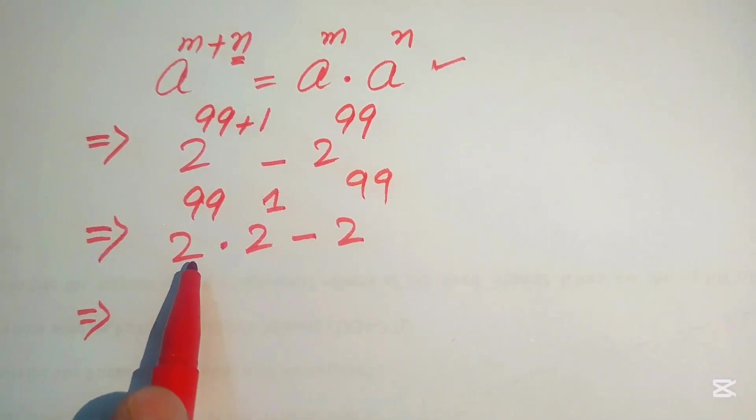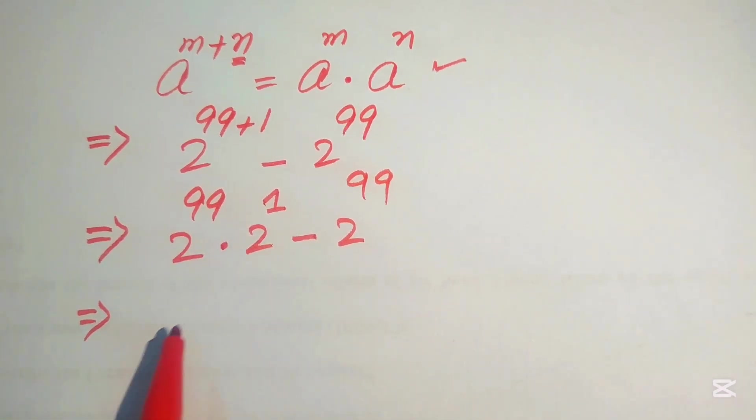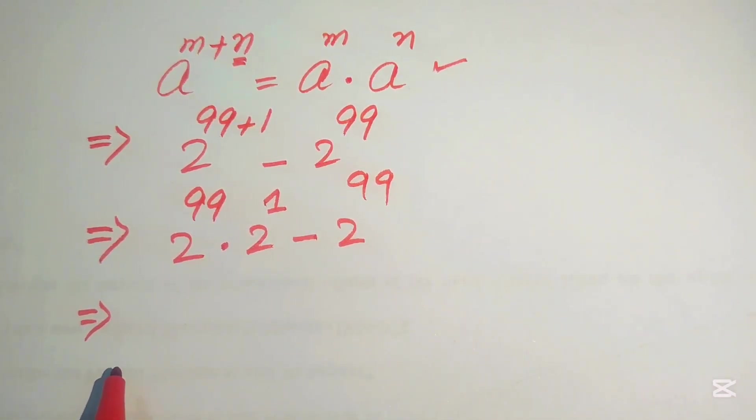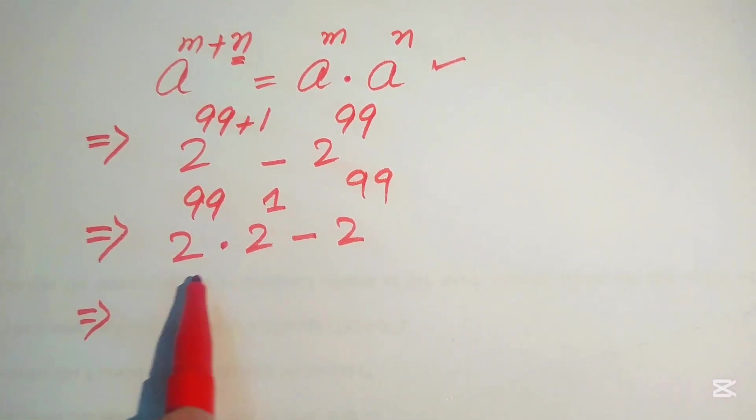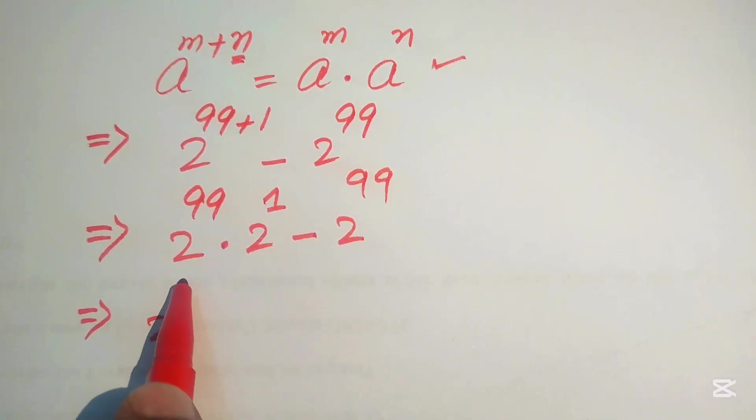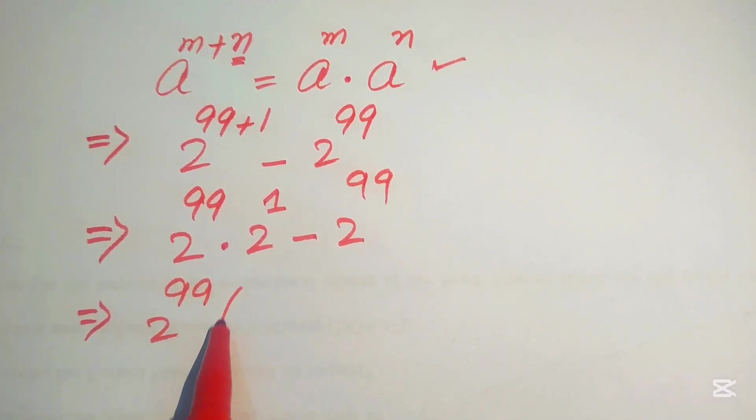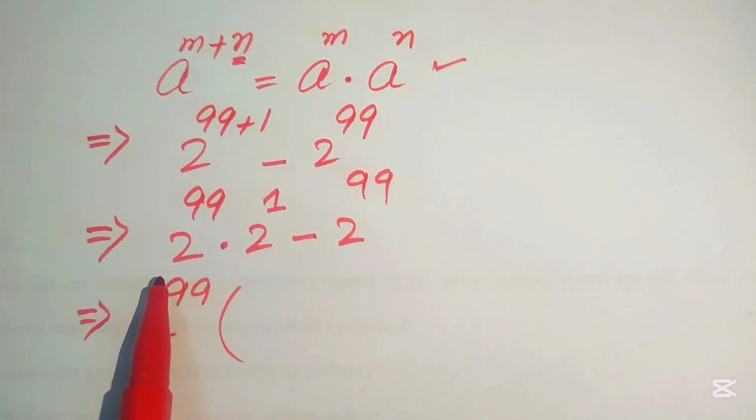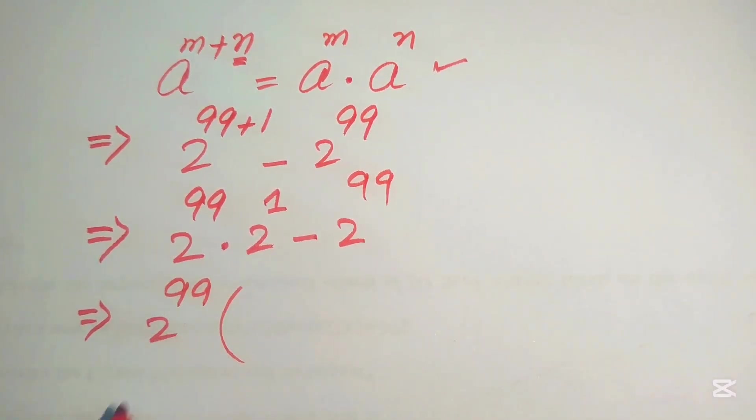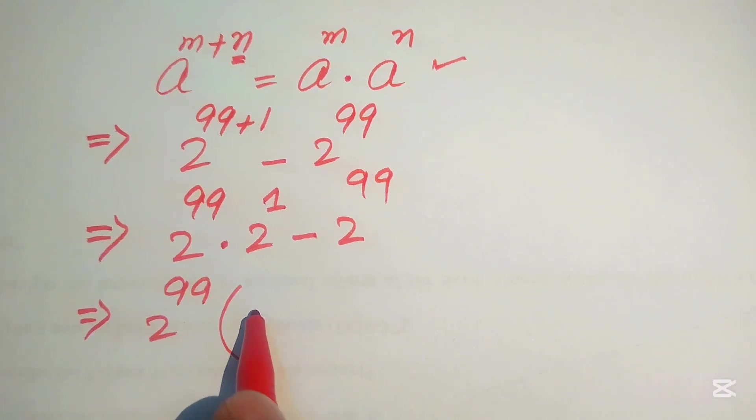Now after that, you see here we have 2 to the power of 99 as the common expression, so we take common 2 to the power of 99. If you take common 2 to the power of 99, we get the remaining term is 2 to the power of 1 minus...